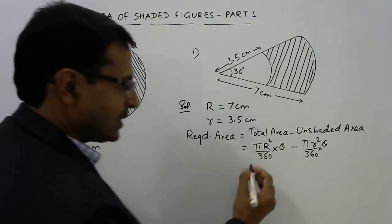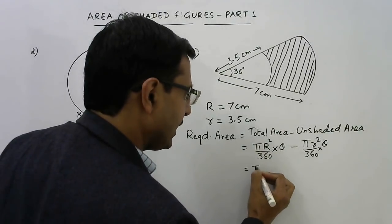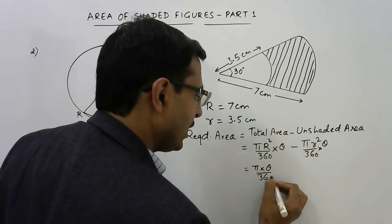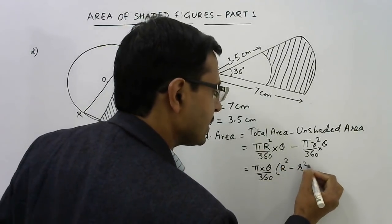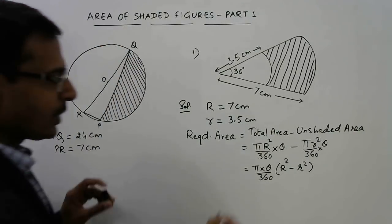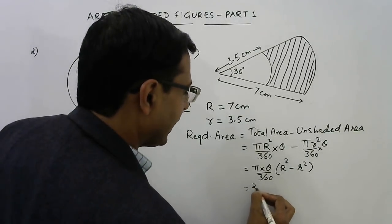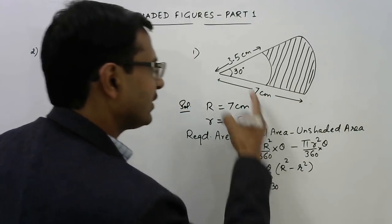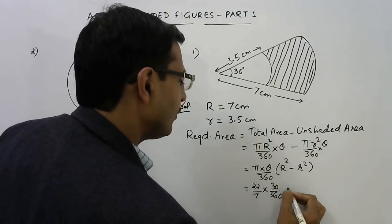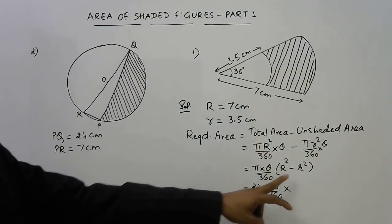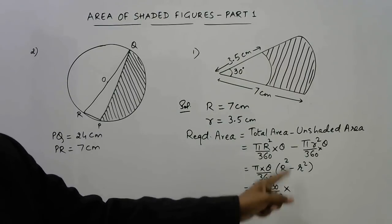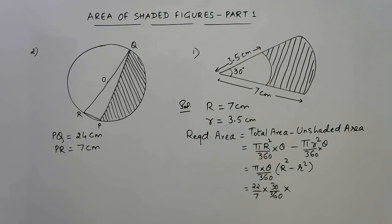Out of this we can take out πθ/360 common, and we will be left with R² - r². Now it is just the calculation part. Substitute the value of π as 22/7, θ is 30 degrees, and 360 will come in the denominator, followed by R² - r². We know the identity a² - b² = (a+b)(a-b).